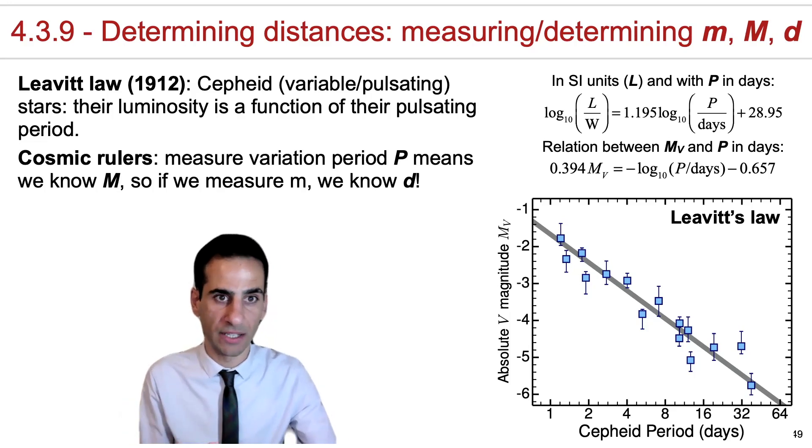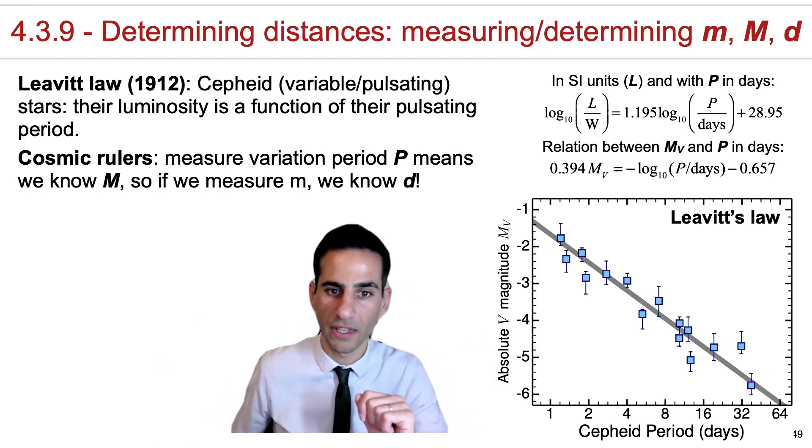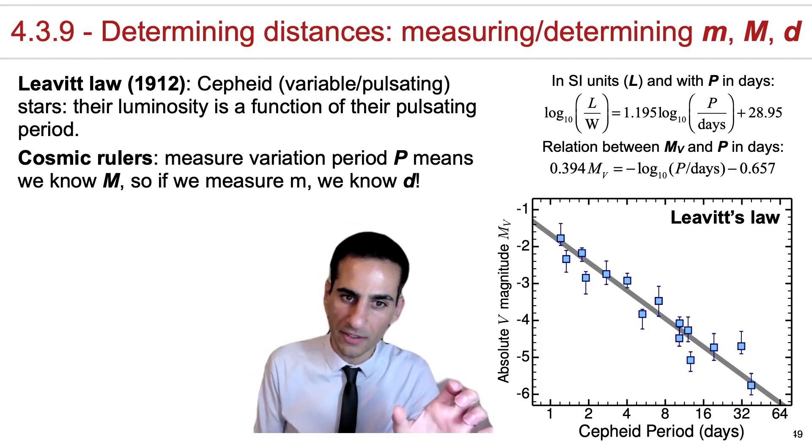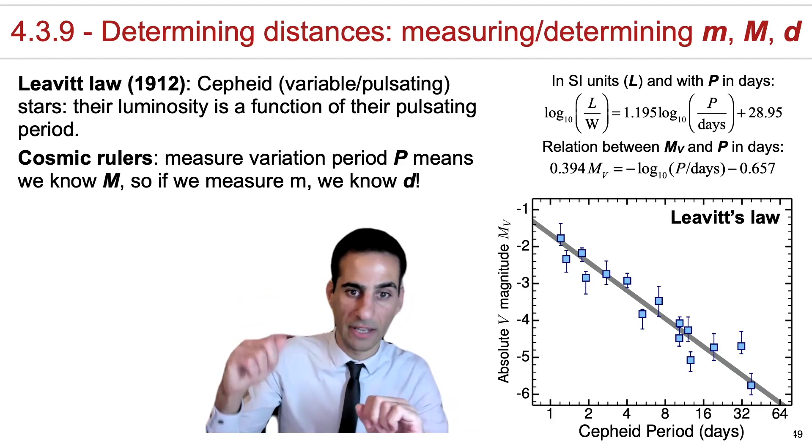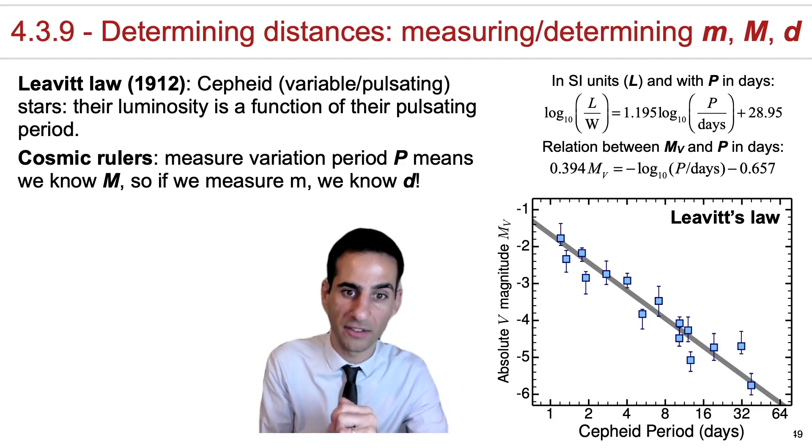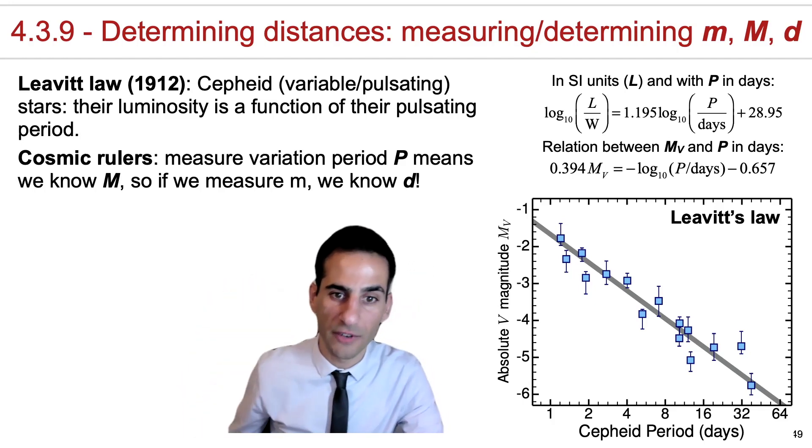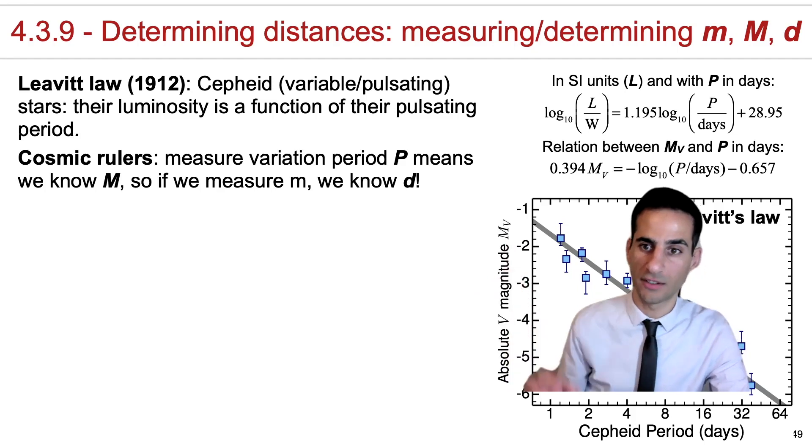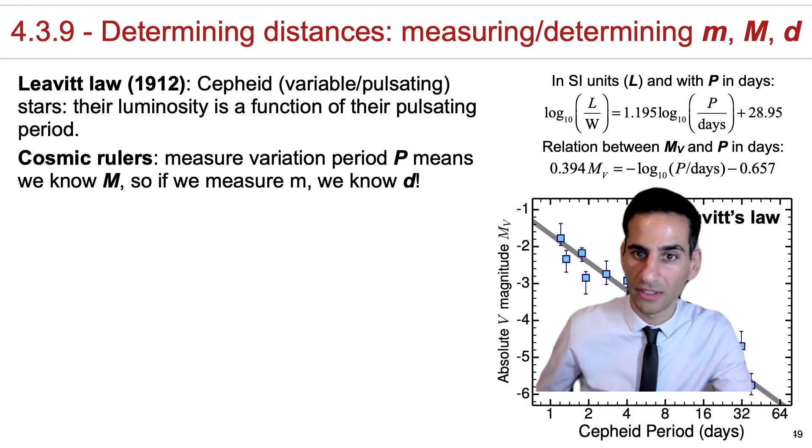As a final example of just applying some of these concepts and the distance modulus is to use the Leavitt law. This is related with what we can see here on the right. And this was a discovery from Henrietta Leavitt that showed that if you measure the periods of the Cepheid variables, there are variable stars where their apparent magnitude changes and where their actually absolute magnitude also changes and reaches some peak. But that peak is actually very nicely correlated with the periods. So if you actually measure the periods, you can have access to the peak absolute magnitude.